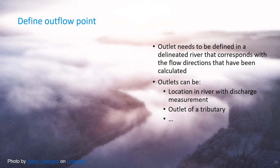The next step is to define the outflow point of our catchment. We need to define this on the delineated river, so we cannot use a background map where a river has been defined in a different way, because our DEM and the delineated streams are now part of a model. And if we don't define the outlet on the model, it will not result in the catchment. The outlet can be a location in a river where we have discharge measurements, or the outlet of a tributary.